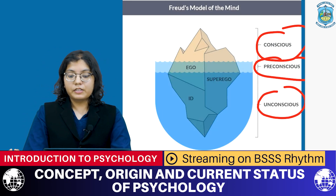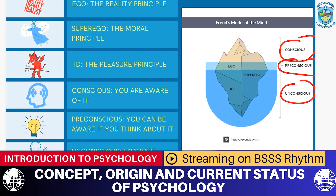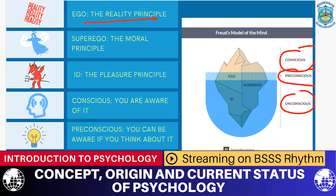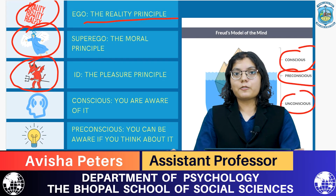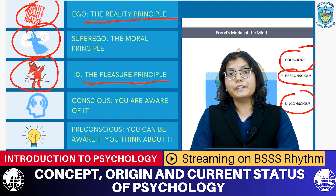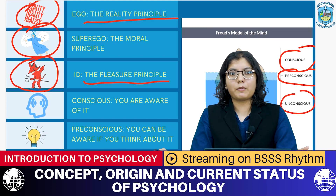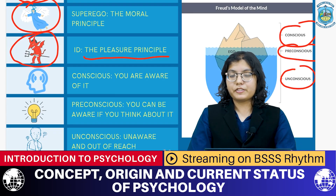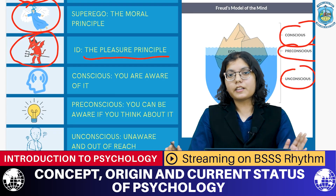Freud also described three aspects of the human mind: ego, superego, and id. Using the Tom and Jerry analogy — when Tom faces a moral dilemma, a devil and an angel appear on his shoulders. The ego works on the reality principle — that's Tom himself, stuck in the middle. The superego is the moral principle, the angel on your shoulder, telling you to do the right thing. And the id is the pleasure principle — the devil — telling you to follow your desires, do whatever you want, without caring about others.